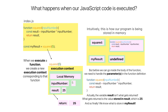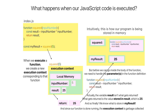So we now know what to store in my_result, which is 25. Since our function is done running and we've returned from it, the execution context is garbage collected.